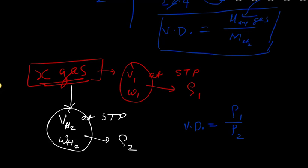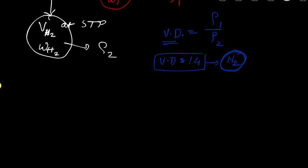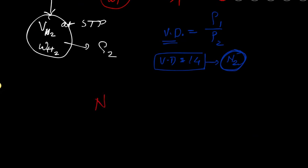Once you know the vapor density, you double it to get the molecular mass. For example, if the vapor density is 14, molecular mass = 2 × 14 = 28, so the gas is nitrogen — because molecular weight of the gas equals two times vapor density.